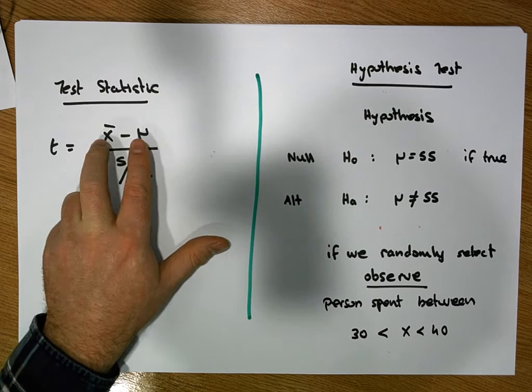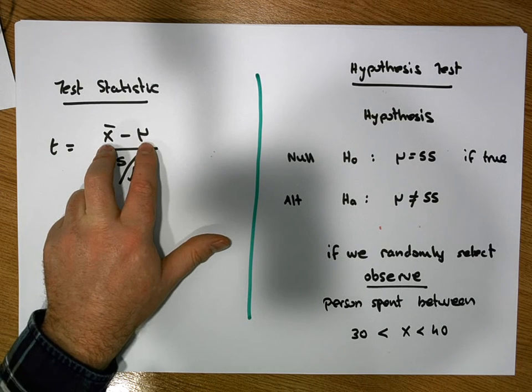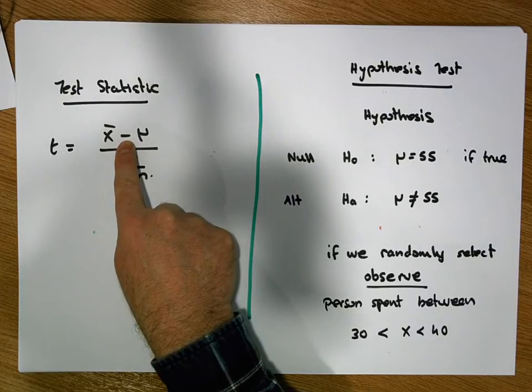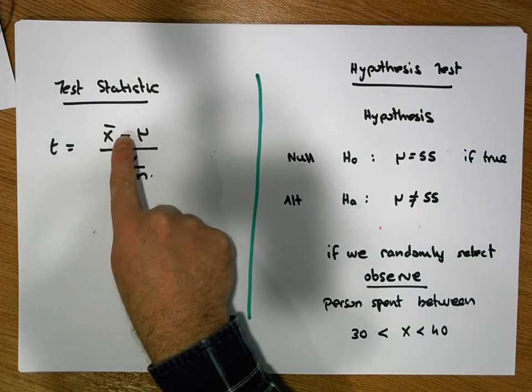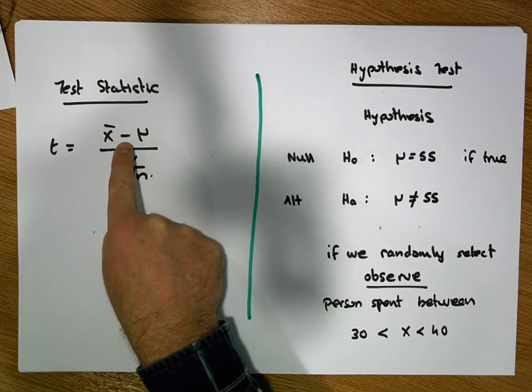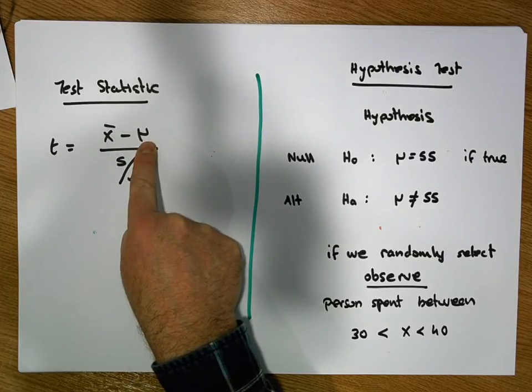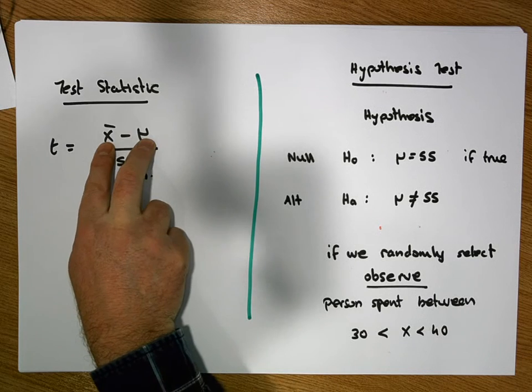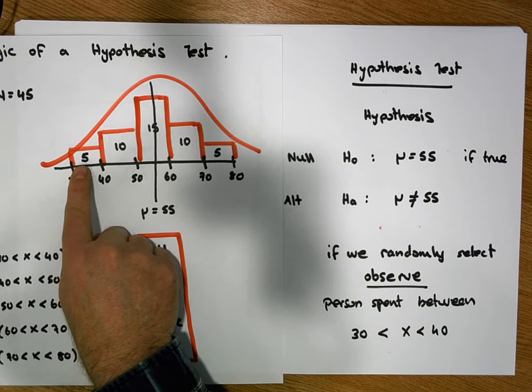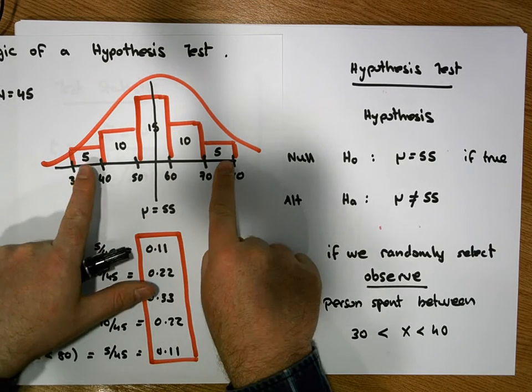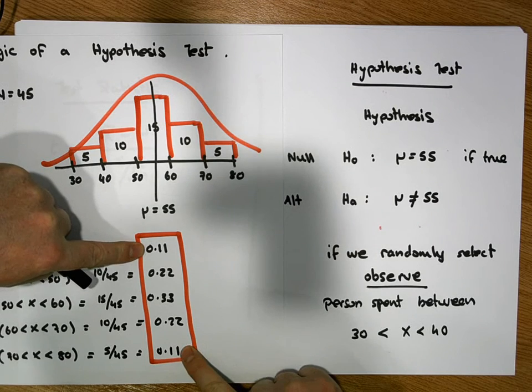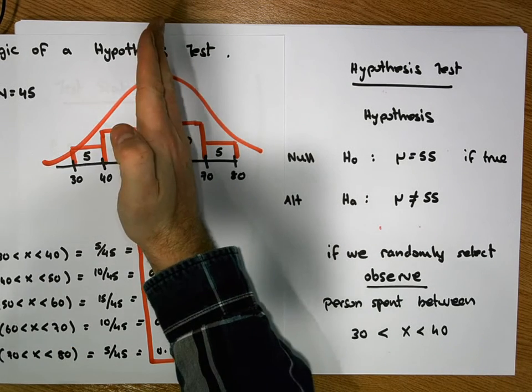So the further this sample is away from our hypothesized center, don't forget, when we take two numbers away from each other, we're calculating the distance between them. So the numerator in the t statistic is telling us how far our evidence is away from our hypothesized center of our distribution. So the larger this value is, the more likely that our evidence falls into one of our tails. And things that happen in the tails have a very, very low probability of occurring if this is true.